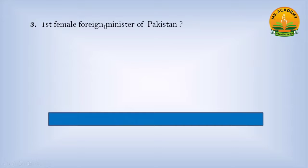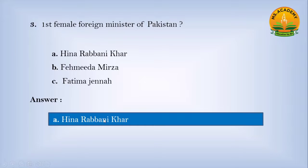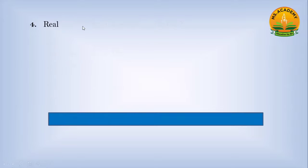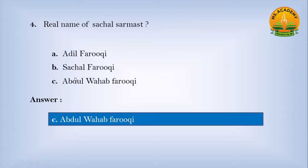First female Foreign Minister of Pakistan: option A Hina Rabbani Khar, option B Fahmida Mirza, option C Fatima Jinnah — answer is A, Hina Rabbani Khar. Real name of Sachal Sarmast: option A Adil Faruqi, option B Sachal Faruqi, option C Abdul Wahab Faruqi — answer is C, Abdul Wahab Faruqi.